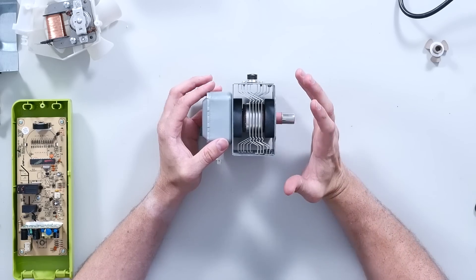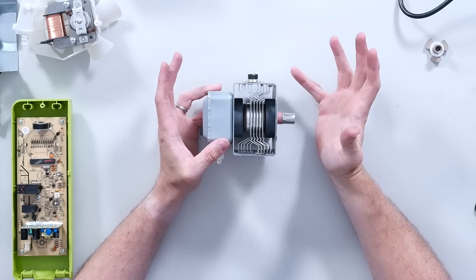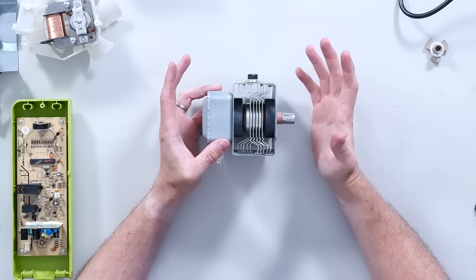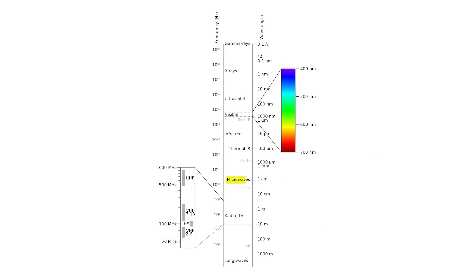Now just quickly, for anybody that doesn't know, microwave refers to a range on the electromagnetic spectrum. It ranges from about one millimetre in wavelength up to a metre. It covers that entire frequency. Now this will be generating microwaves at approximately 2.35 gigahertz.